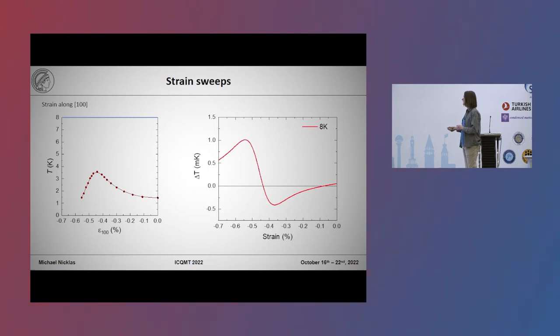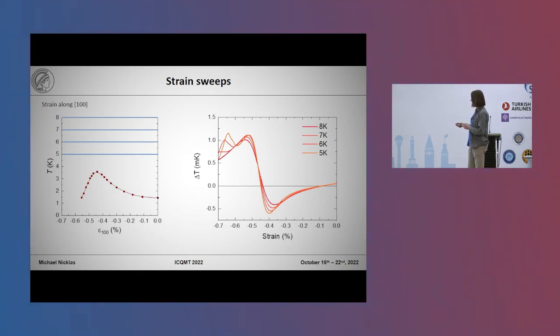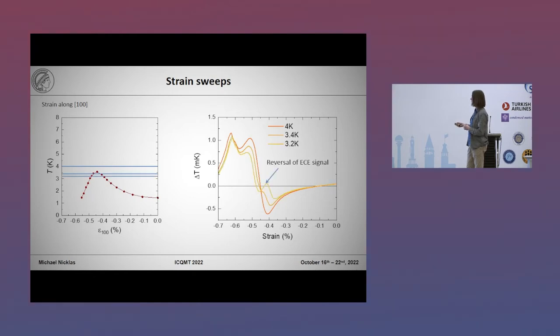And now I show you strain sweeps. So basically here at 8 Kelvin we see that we have a zero crossing of the temperature oscillation at the Van Hove singularity. So basically that indicates that we have a maximum in the entropy, because here we have a negative slope. And when we then go to lower temperatures we see that here an additional feature is appearing. This I will discuss later, so that is related to a magnetic phase. But we see that here the zero crossing is almost not changing. And then at the last temperature above superconductivity, when we then go below, we see that here we have a reversal of the ECE signal. So we have still the zero crossing but the second derivative is changing. So we have instead of a maximum in entropy we have now minimum in entropy, so we have a quench of the entropy.